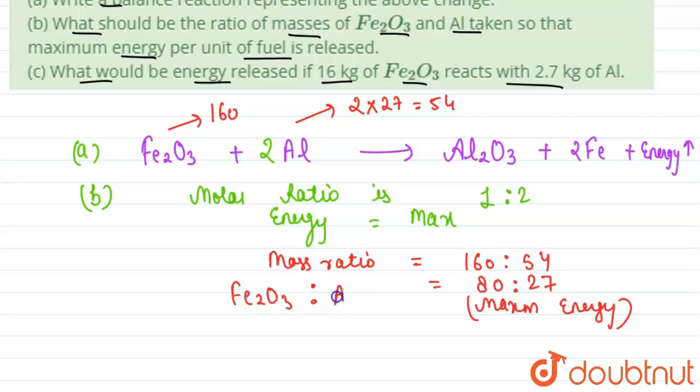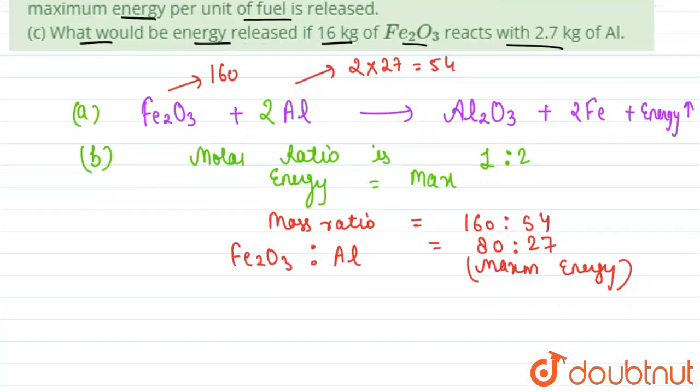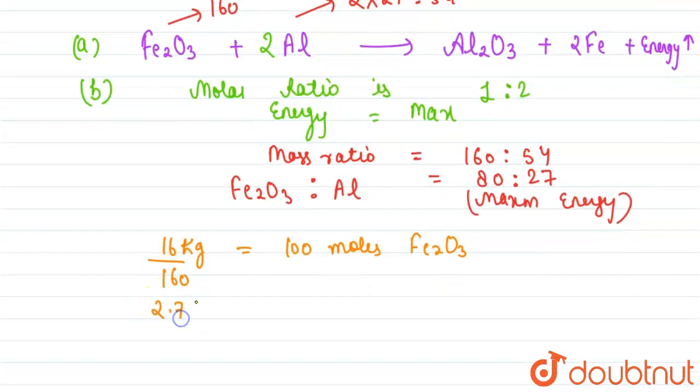Now for the third part, we have been provided that 16 kg of Fe2O3 reacts with 2.7 kg of aluminum. So 16 kg of Fe2O3, that means 16 upon 160 equals 100 moles of Fe2O3, and 2.7 kg of aluminum means 100 moles of aluminum.